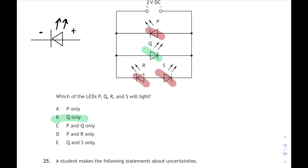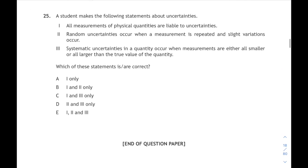Last one, question 25. It's a triple statement question about uncertainties. Statement 1: All measurements of physical quantities are liable to uncertainties. Well, if it's a measurement, then yes, of course, it will be liable to some uncertainty in that measurement. Random uncertainties occur when measurements are repeated and slight variations occur. That's true as well. Especially if you're timing things, you'll get random fluctuations. So that one's true. Statement 2 is true. And systematic uncertainties occur when measurements are all smaller, or all larger than the true value of the quantity. Then yes, that's true as well, because there's something wrong with your system that's forcing all your measurements to be out the same way. So all three of those statements are true. It's statement 1, 2 and 3. So the answer is 25E.